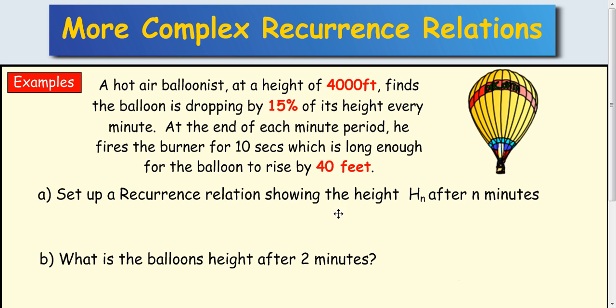Set up a recurrence relation showing the height H n after n minutes. So start a recurrence relation H n+1 equals and then we look for our multiplier. The balloon's dropping by 15%, so it starts at 100% and drops by 15. So you're now left with 85% of the height.